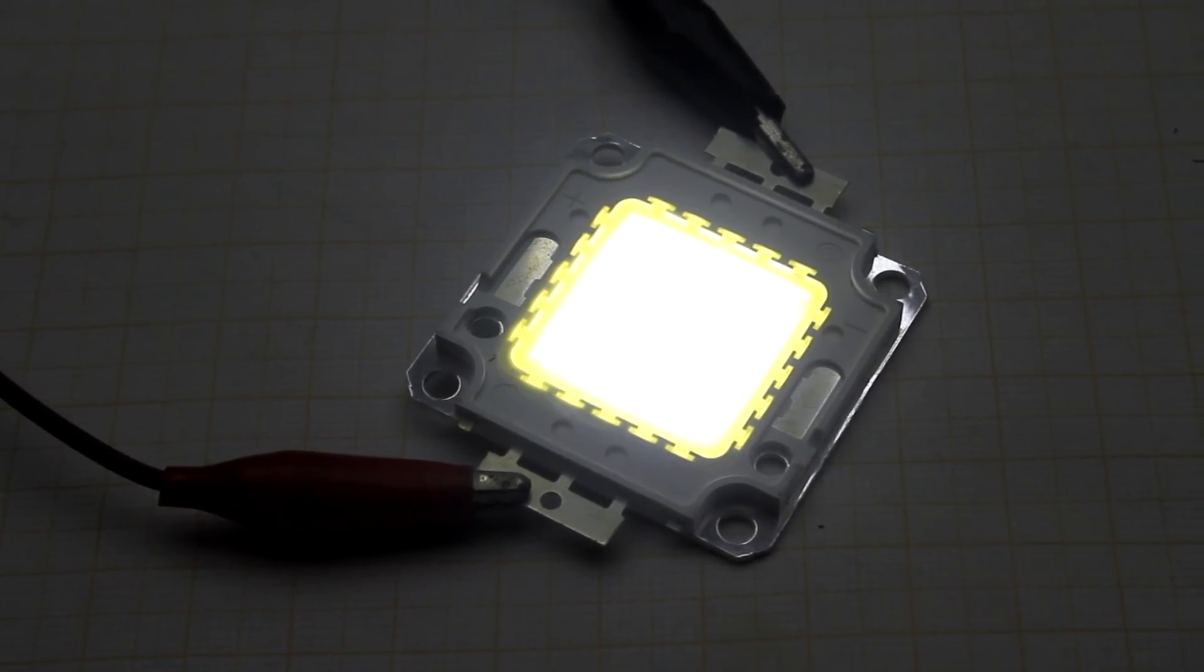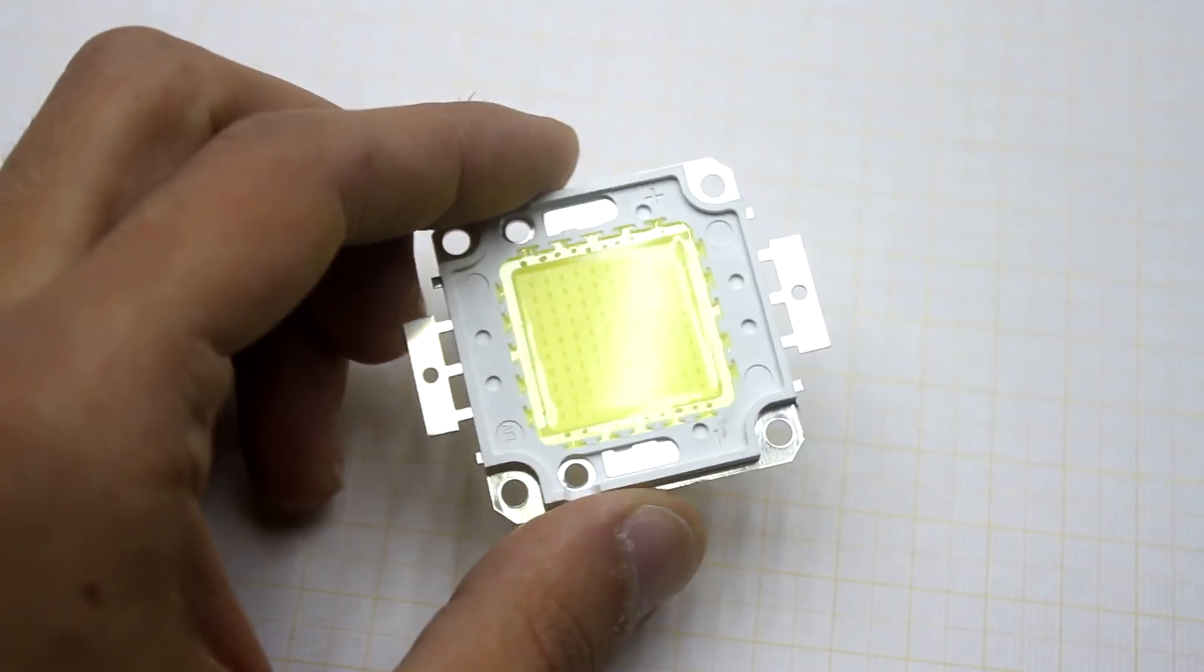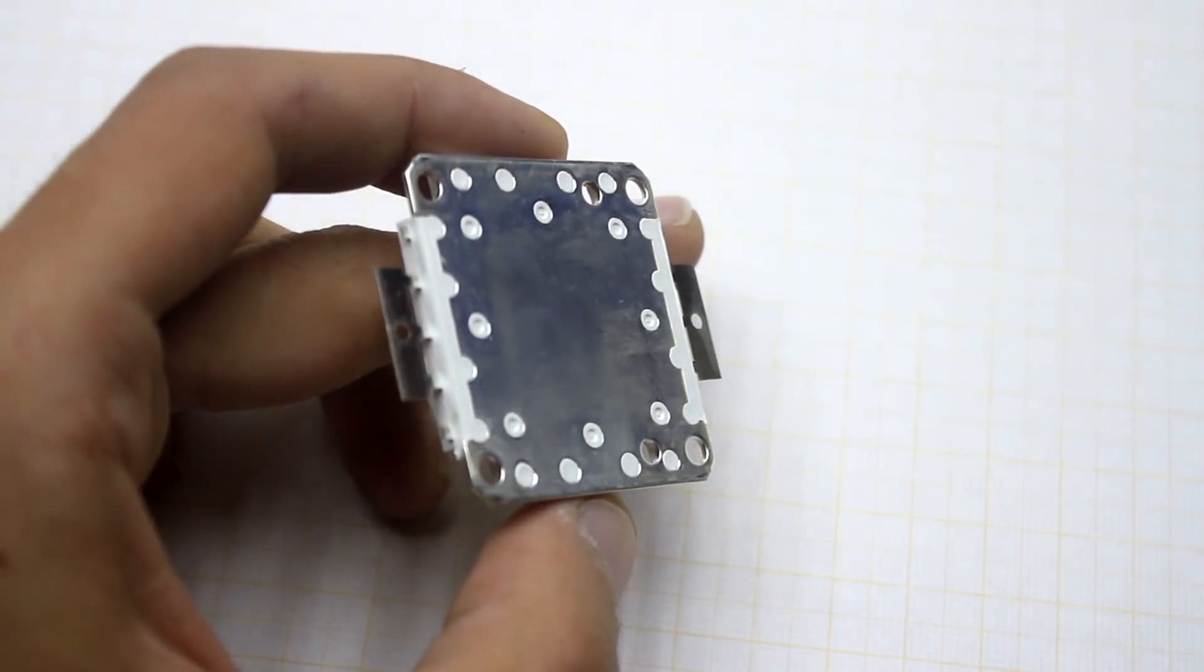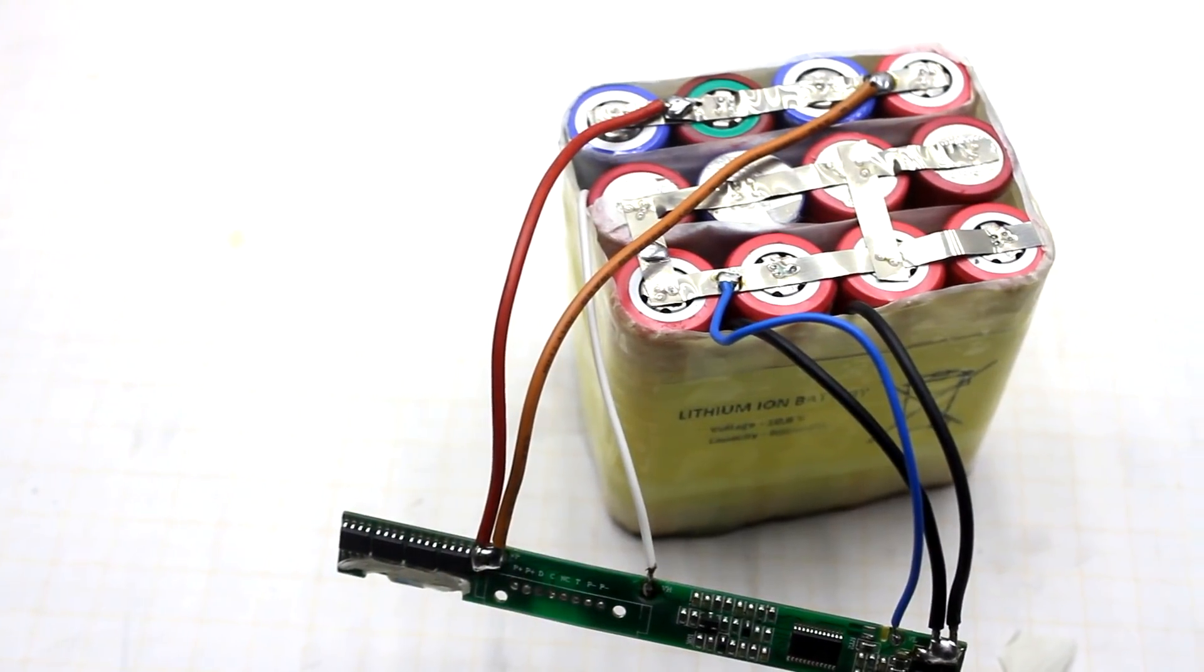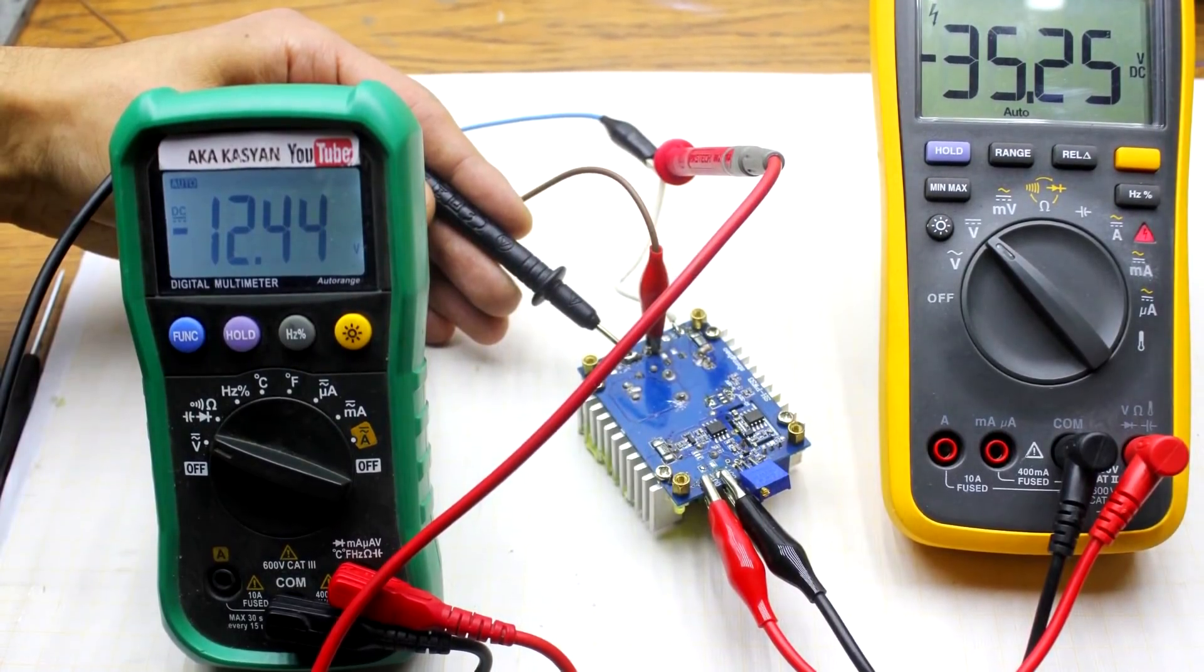The supply voltage of such matrices depends on the manufacturer, and usually from 30 to 40 volts. In my case, it is powered from 35 volts, but, as you remember, my battery is only 12 volts. To solve this problem, I need an inverter.